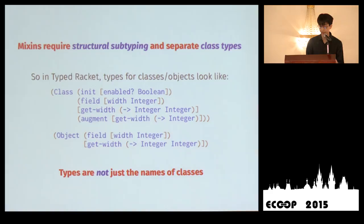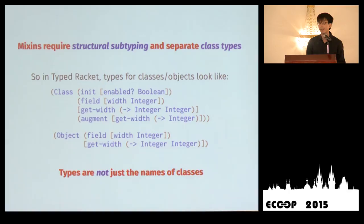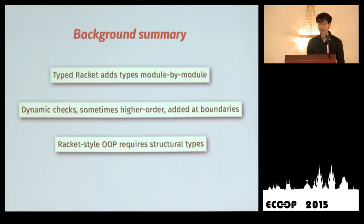To support these mixins, Typed Racket necessarily uses structural subtyping for its object type system. We also have to separate class types from class definitions, because when we apply a mixin, we generate new classes at runtime that can't be given static names — so we can't use nominal typing like Java. In Typed Racket, we have both types for classes and for objects. A class type contains types for fields and methods, plus things like the init clause specifying constructor arguments and inheritance constraints. An object type just has the types of its fields and methods. Importantly, types are not just the names of classes here.